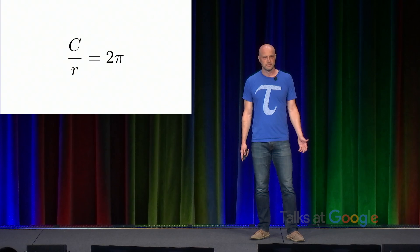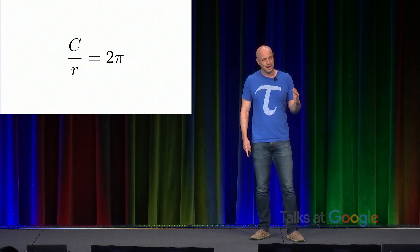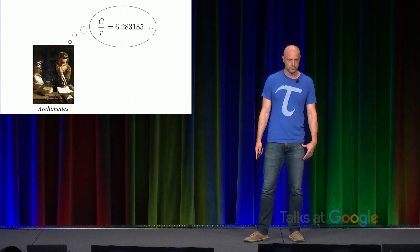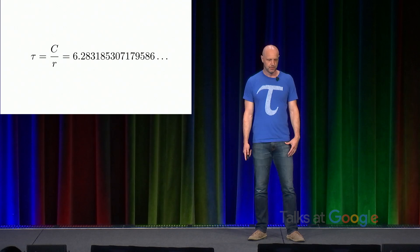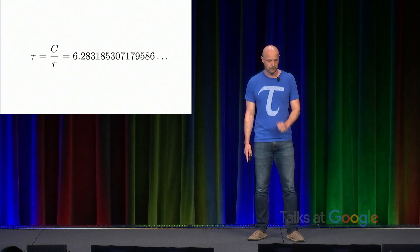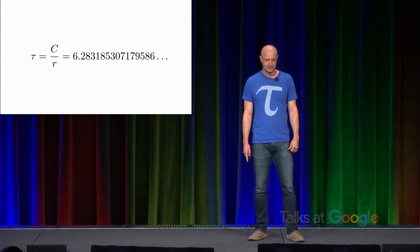If you look back at the original approximation by Archimedes, he actually calculated bounds for both C over D and C over R. In modern notation, C over R is 6.28 through 185, and so on. So in 2010, I proposed a notation for C over R. I proposed using the Greek letter tau. And this was in an effort to popularize what I believe is the true circle constant in opposition to pi.